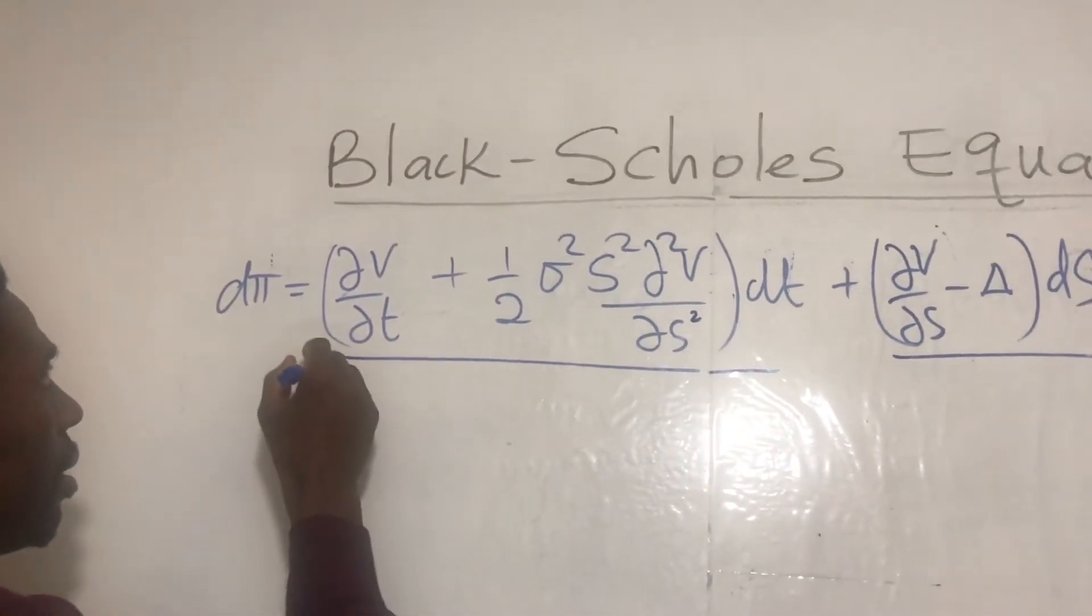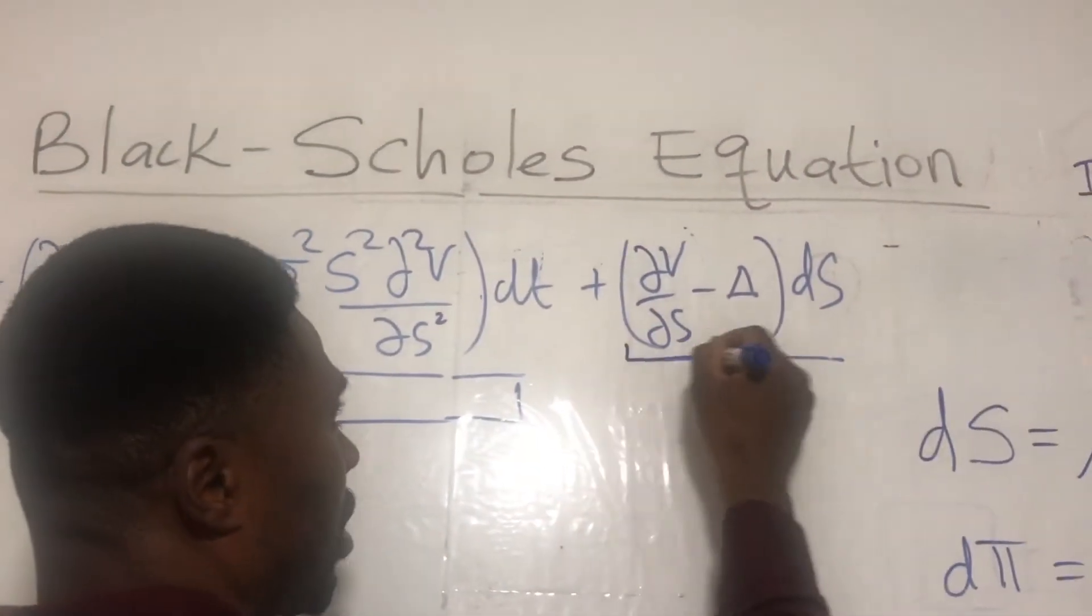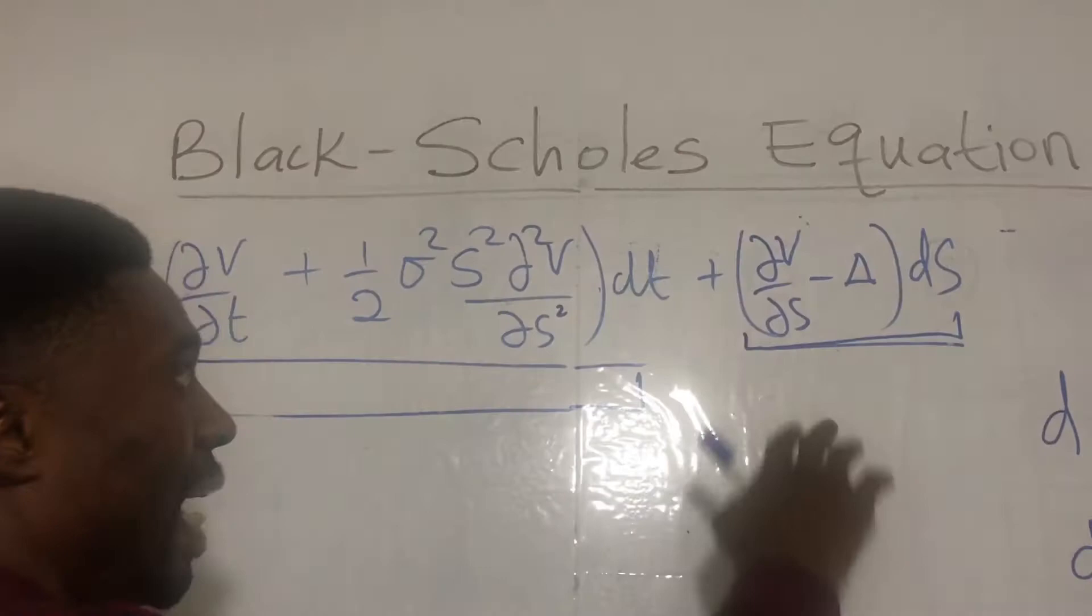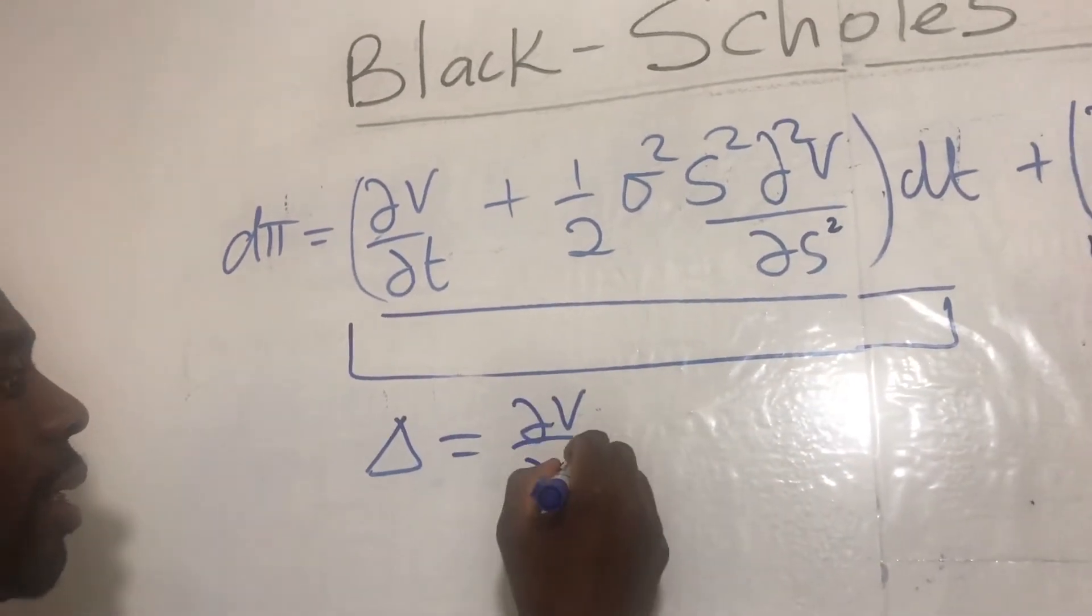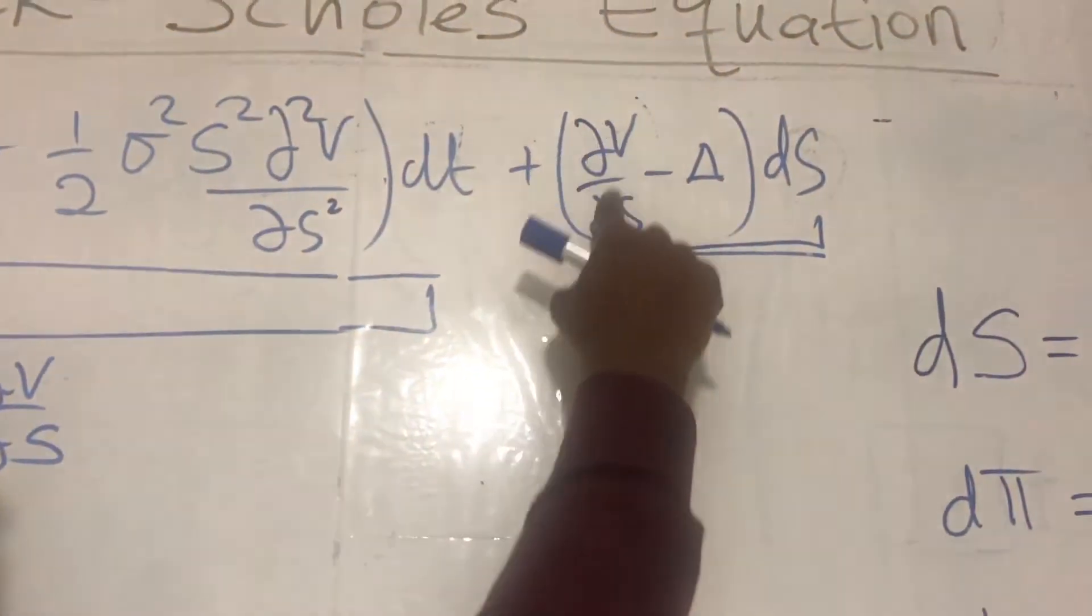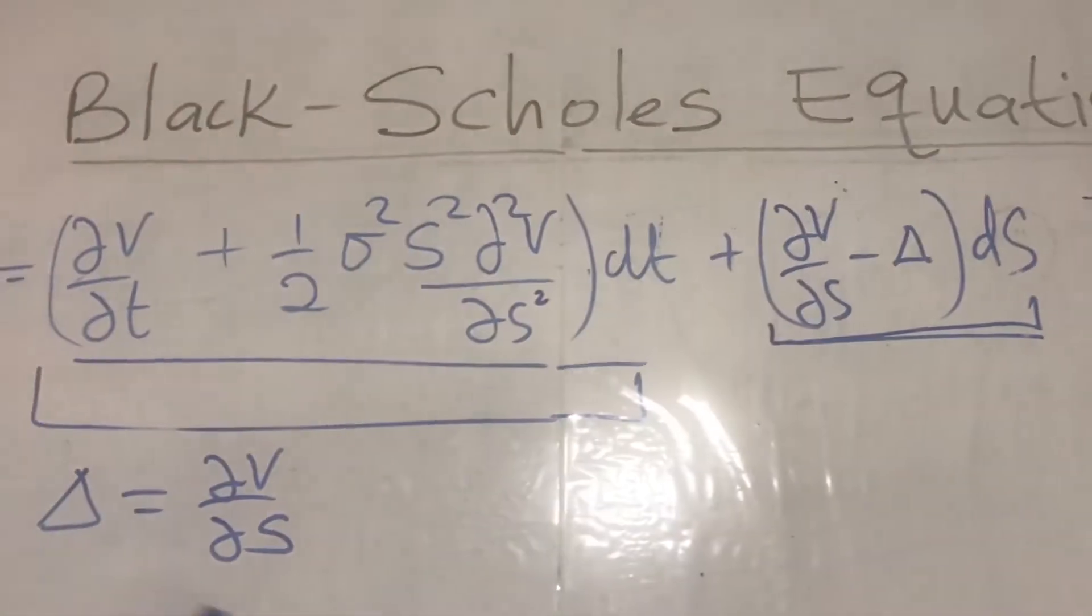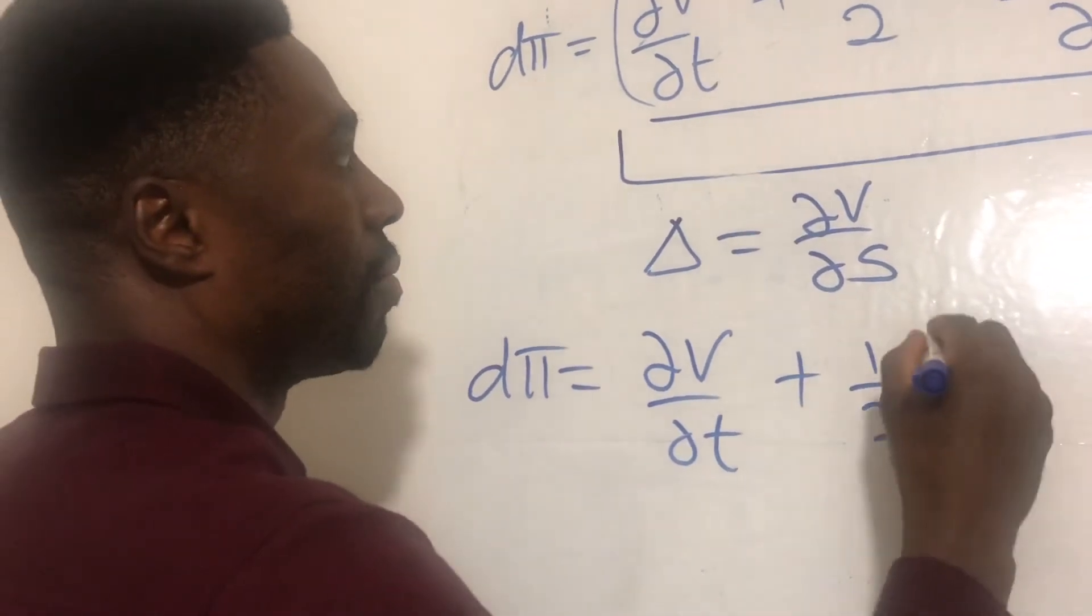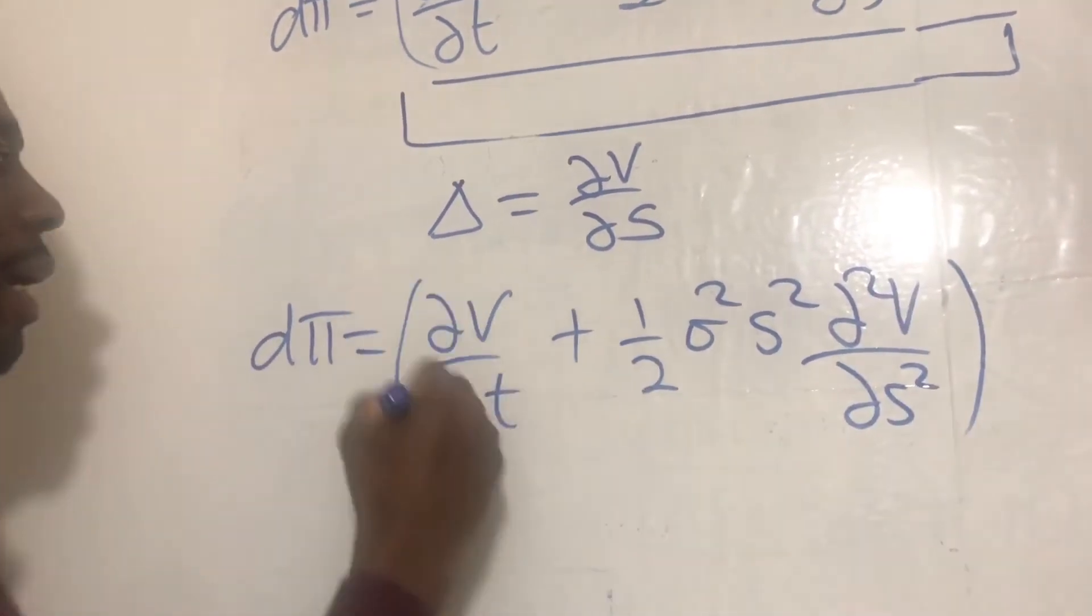Now, at this time, this bit is deterministic since there's no randomness here and this bit is stochastic because of the dS we have here. So this is where all the randomness is. So to eliminate the randomness here, we make a choice of delta to be equal to ∂V/∂S. If we choose delta to be ∂V/∂S and we substitute into this, then we're going to have ∂V/∂S minus ∂V/∂S, which will be zero. Therefore, we will eliminate dS. So this then becomes dπ equals (∂V/∂t + one half σ² S² ∂²V/∂S²) dt.